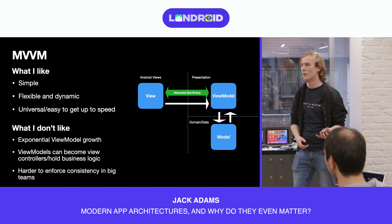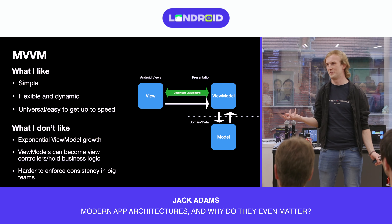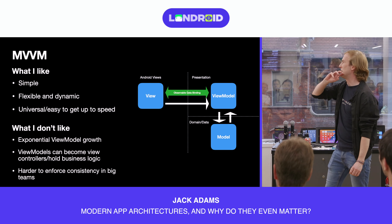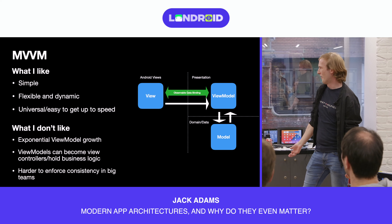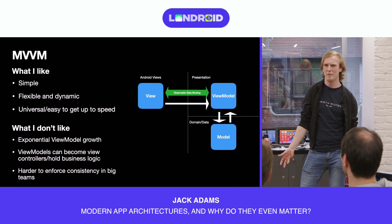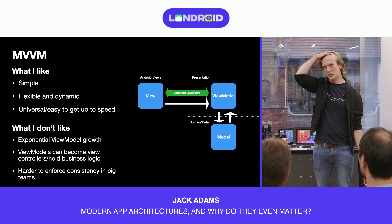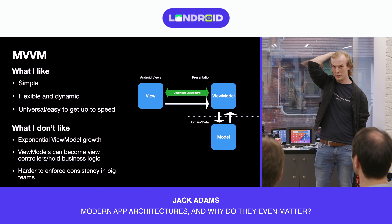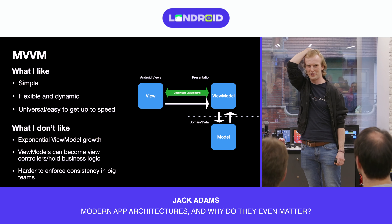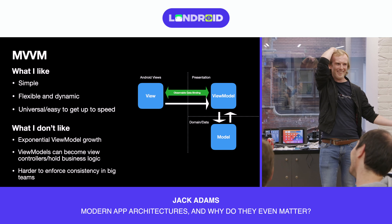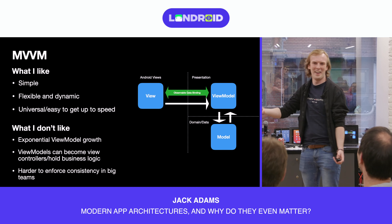Recap. MVVM: what I like — it's really simple, you can get going in 20 minutes. It's flexible and dynamic; you don't really have to think too hard when you write MVVM, you just do what makes sense. It's universal and easy to get up to speed — if someone joins your company, they've definitely done MVVM before. What I don't like is the growth of the ViewModel. The real problem isn't the size itself — it's that eventually some developer opens a thousand-line ViewModel and, like the warehouse analogy: if you walk past an abandoned warehouse where every window is smashed, no one's going to arrest you for throwing another brick. Developers see crappy code and think no one will complain if I write more crappy code, so you end up with more and more crappy code.